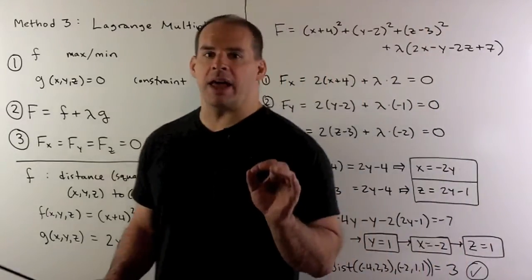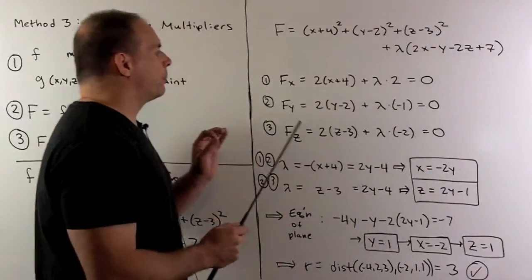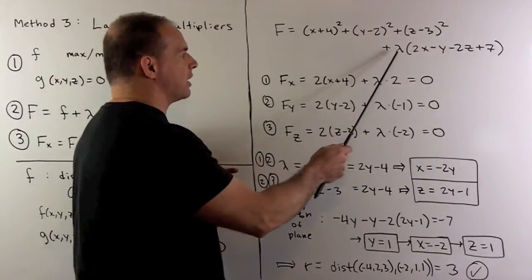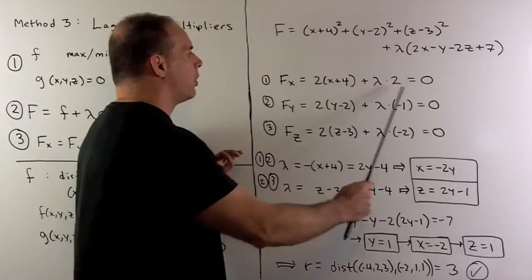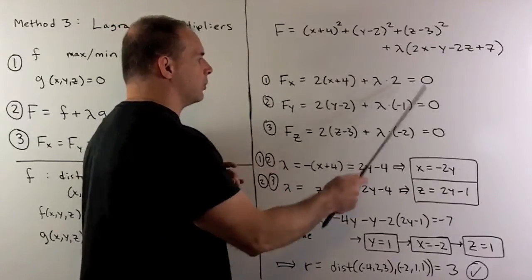We form capital F. Then, we take the partials, treating lambda as a constant. So, we get our three partials as follows, and we set them equal to zero.